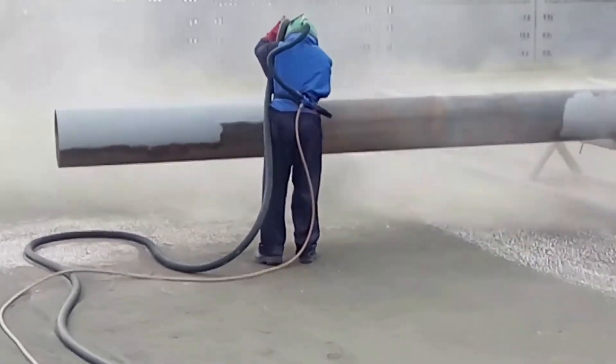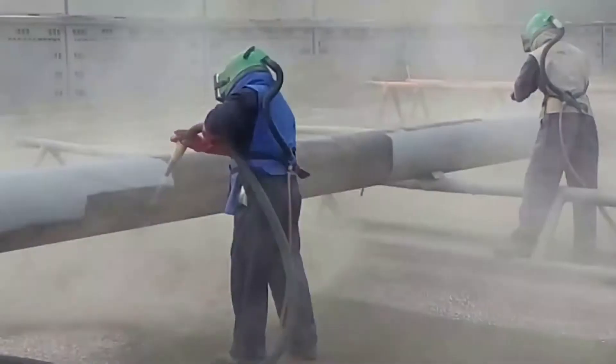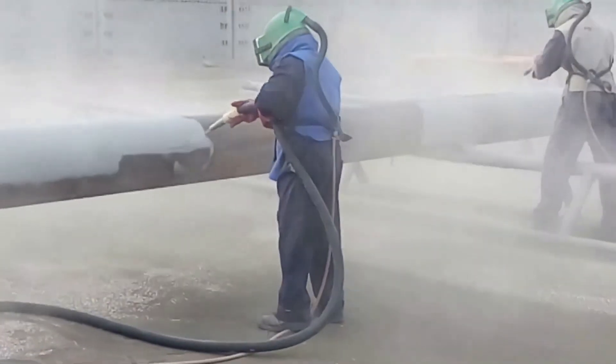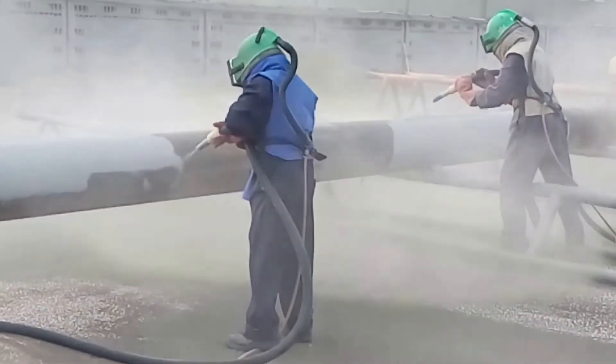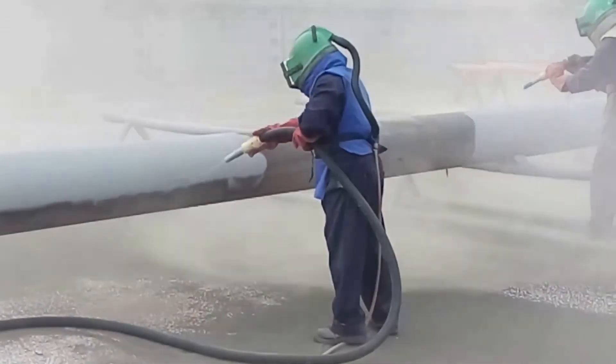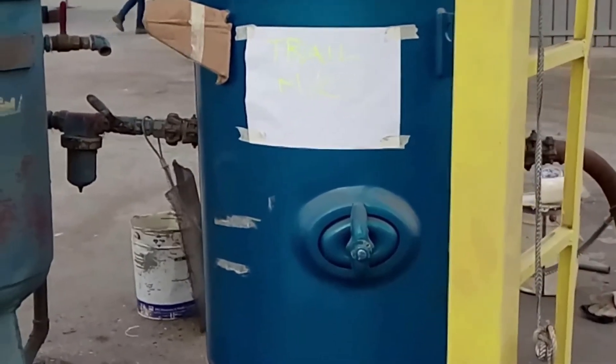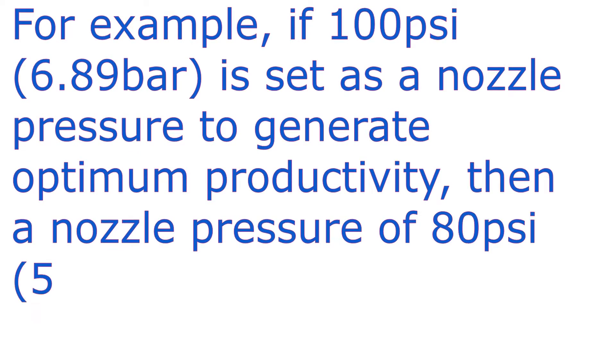To generate the ideal blast nozzle pressure requires a basic understanding of the effect of using a large compressor capacity and the effect of increasing or decreasing the nozzle size. As a general rule, a higher compressor capacity in CFM generates higher nozzle pressure and air speeds. For example, if 100 PSI is set as the nozzle pressure for optimum productivity, then a nozzle pressure of 80 PSI will result in 66% blasting efficiency, and a nozzle pressure of just 60 PSI will result in 50% blasting efficiency.